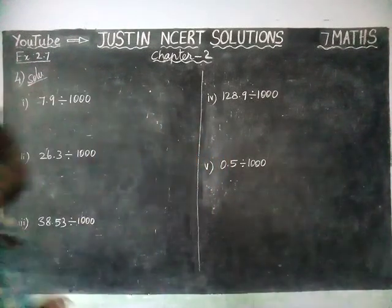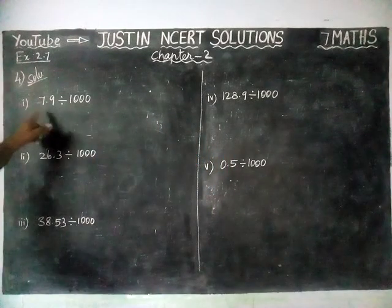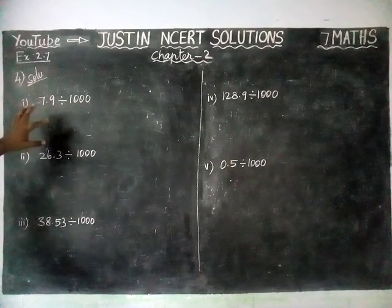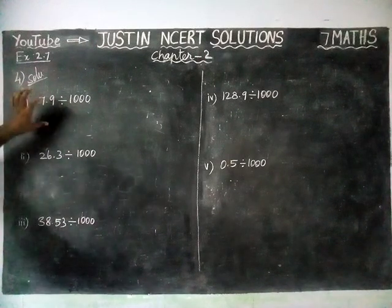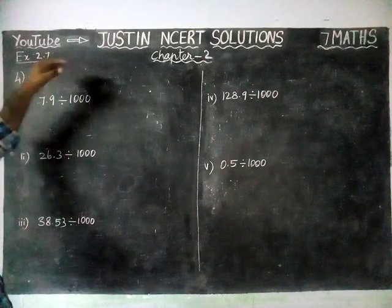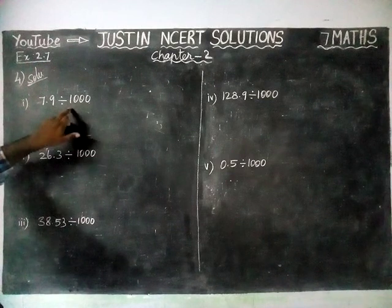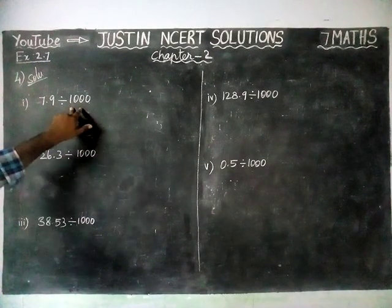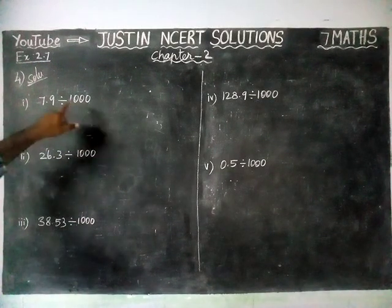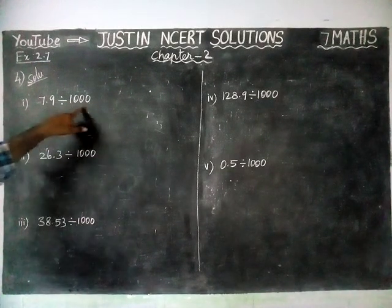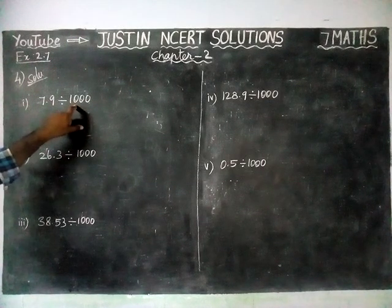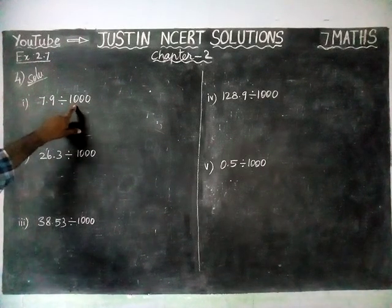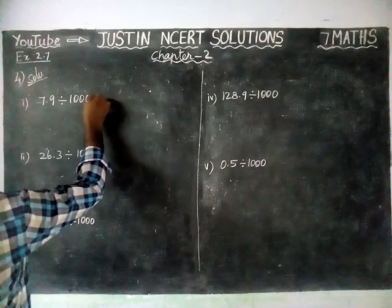Here, we are going to divide a decimal number by 1000. The same concept which we saw in the previous sums: when we are dividing by a multiple of 100 or 1000, according to the number of zeros, we have to move the decimal to the left-hand side.